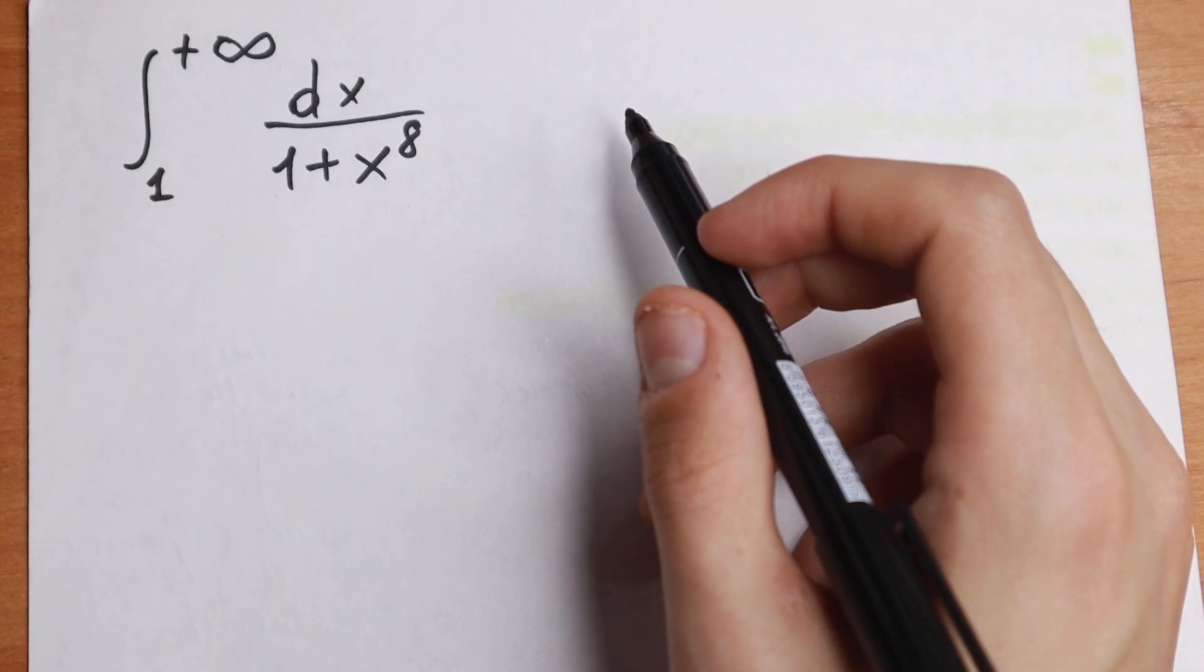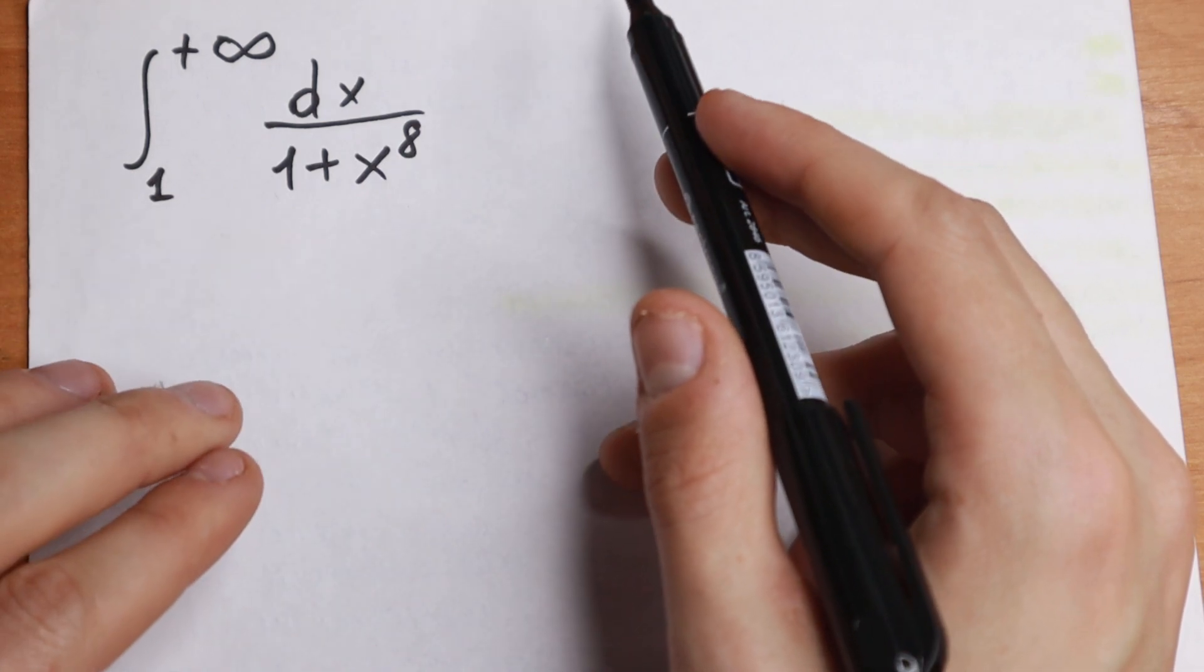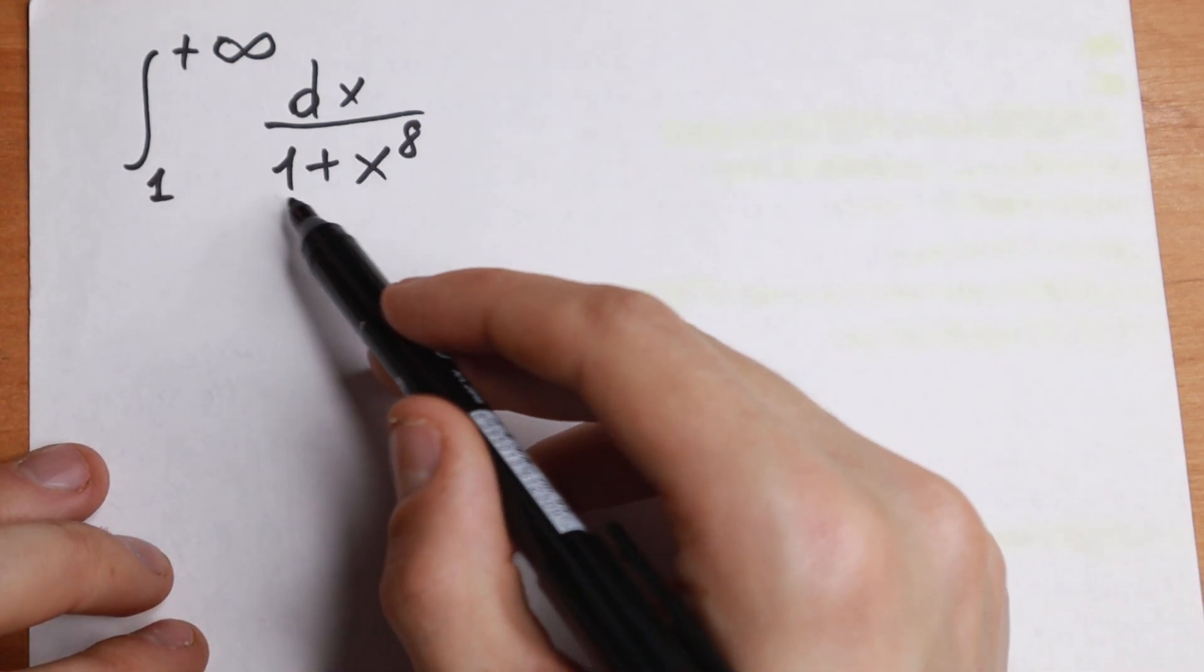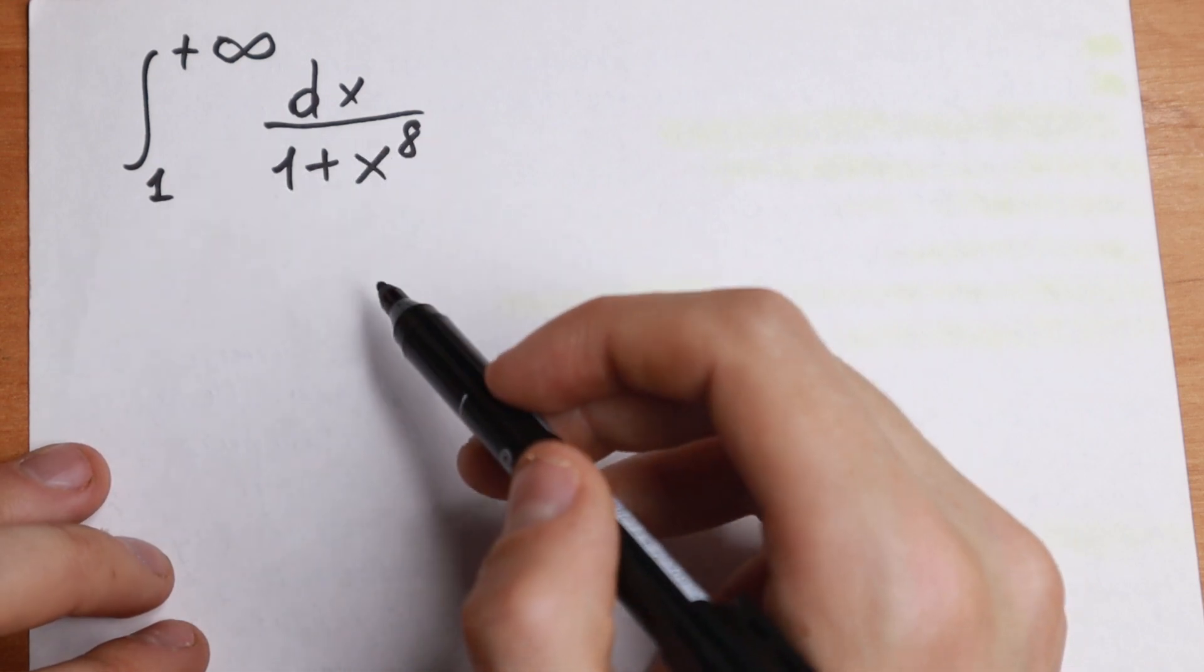How can you find information about this integral? I want to show you a really good approach because, take a look, we have a really bad denominator right here.